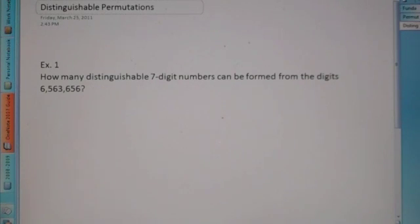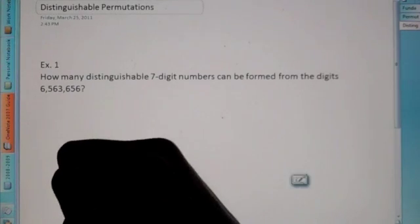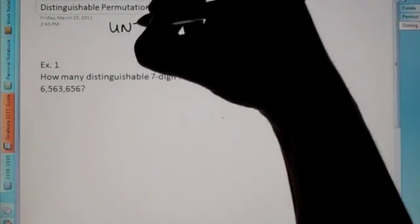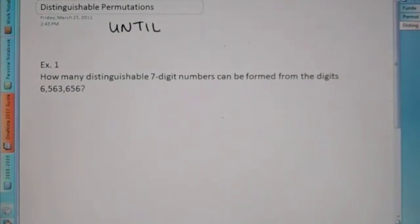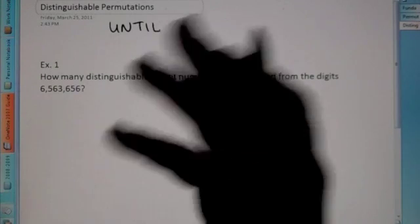What are distinguishable permutations? Well, what we learned last time, if I give you the letters U-N-T-I-L, until, and if I were to say find all the different ways you can set up these letters, and order doesn't matter,